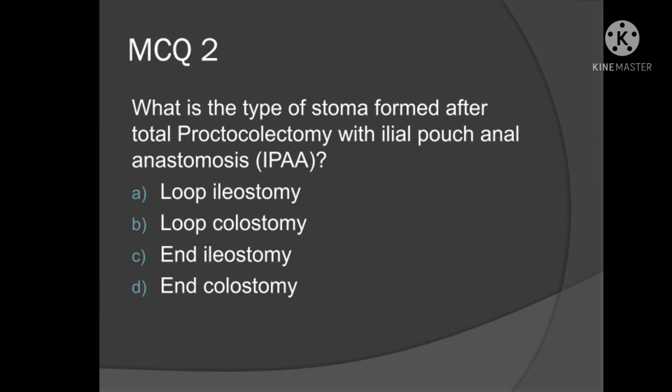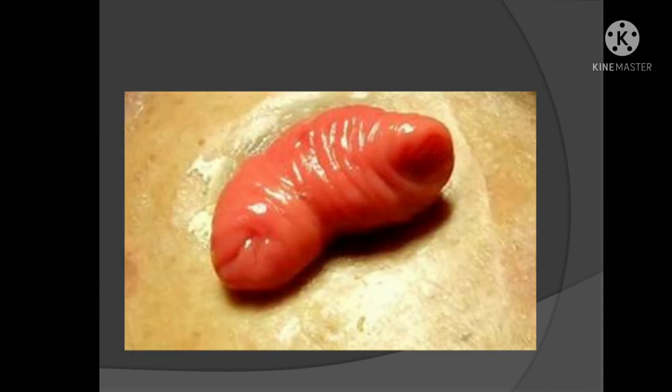Loop ileostomy or loop colostomy is usually temporary. End ileostomy or end colostomy can be temporary or permanent. But a loop stoma is usually made for temporary purposes, such as when you want to protect a distal anastomosis.